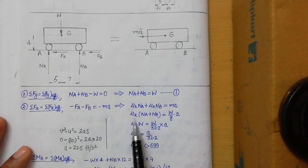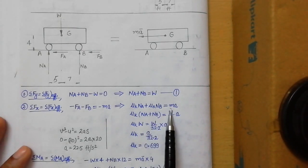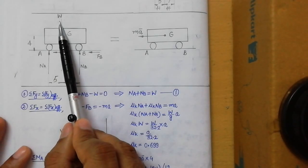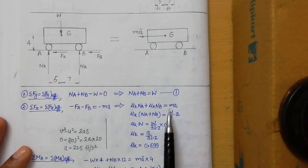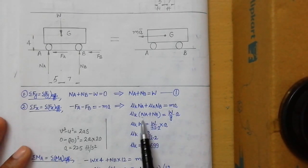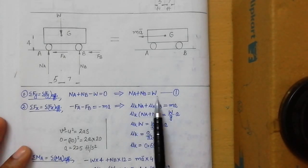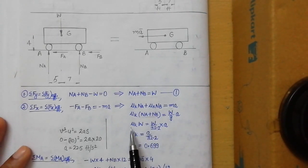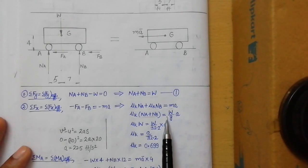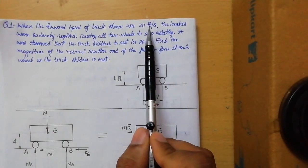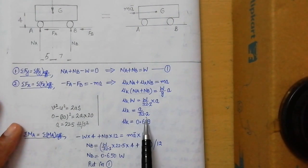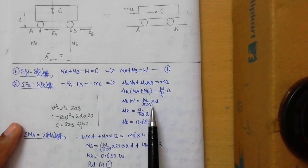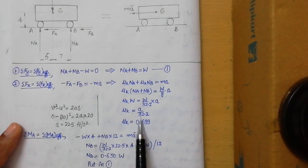Taking μk common: μk(NA + NB) = ma. We convert mass to weight since we assumed W at the start: m = W/g, so μk(NA + NB) = (W/g)·a. Since NA + NB = W from Equation 1, substituting gives μk·W = (W/g)·a. W cancels, leaving μk = a/32.2, using g = 32.2 ft/s² since all units are in feet. We still need to find acceleration a.